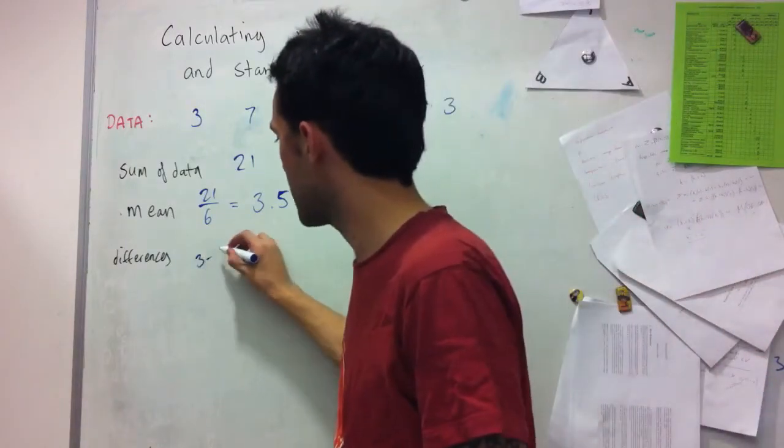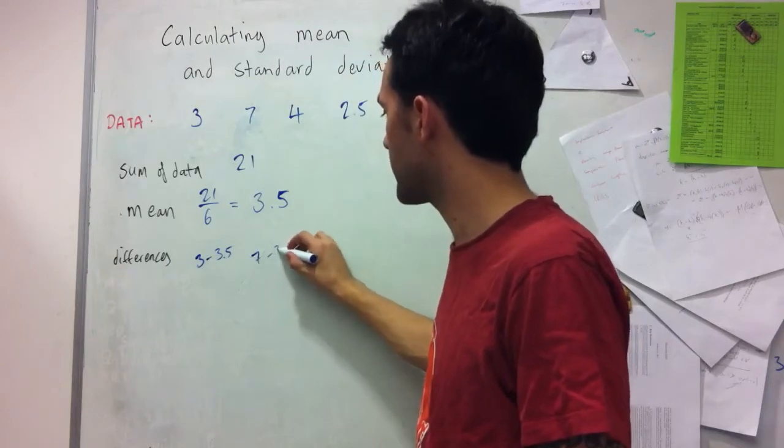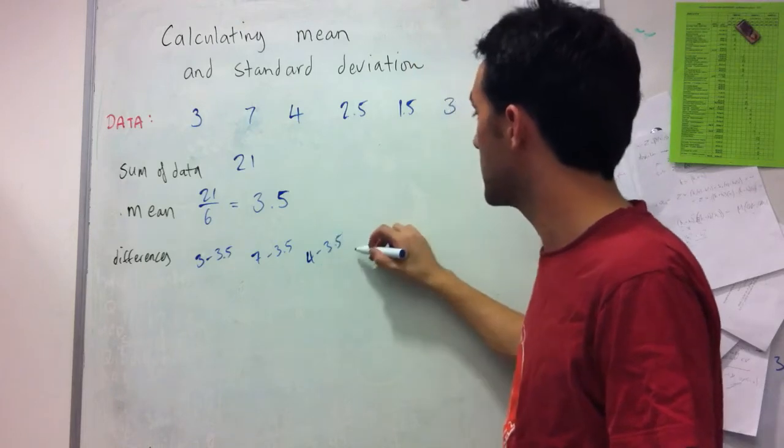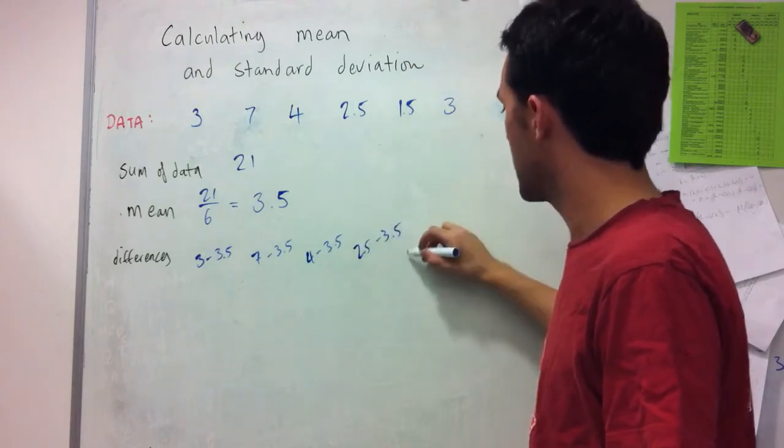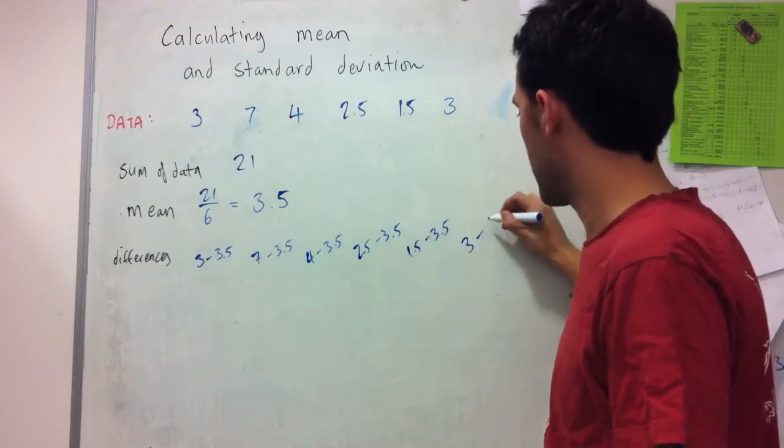So we're going to have 3 minus 3.5. We're going to have 7 minus 3.5, 4 minus 3.5, 2.5 minus 3.5, 1.5 minus 3.5, and 3 minus 3.5.